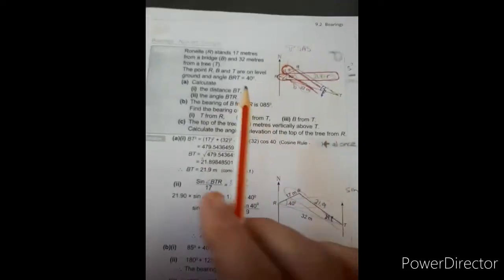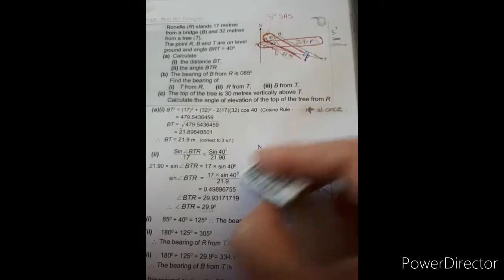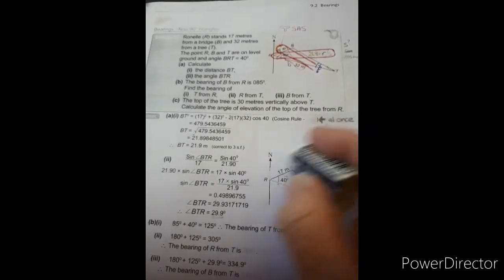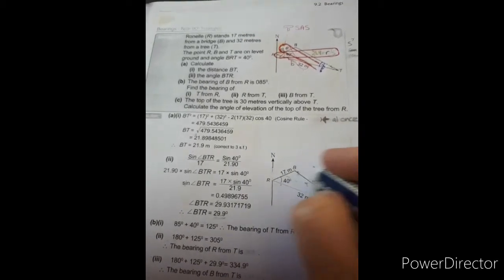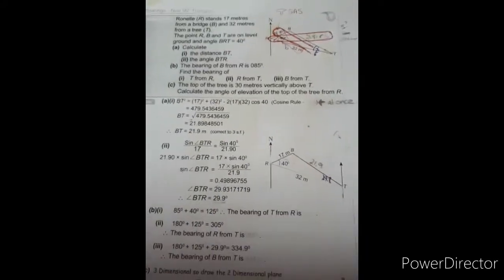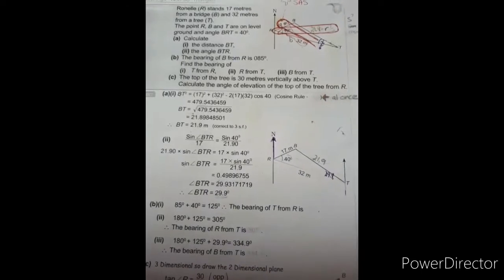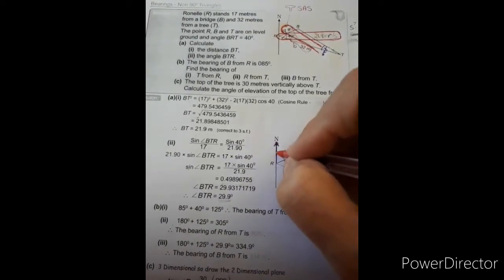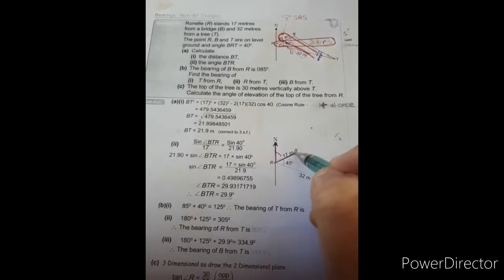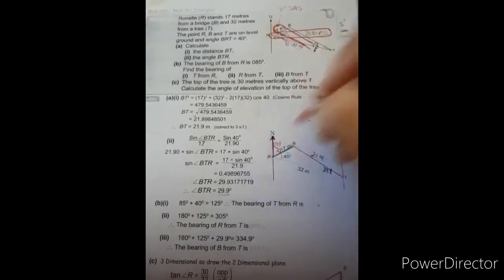Then if we go on, they're saying the bearing of B from R is 085. The bearing of B from R, so we have our north line at R. We then go along clockwise until we meet the journey line. B and R are the ones that are involved, so this one is 085 degrees.